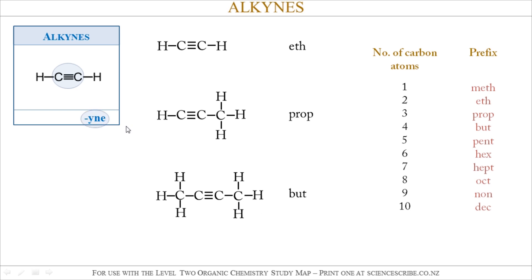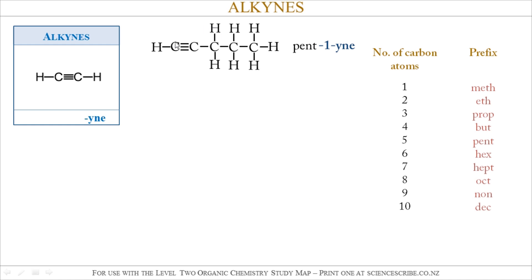All alkynes have the ending -yne, so in these examples I've got ethyne, propyne, and but-2-yne. I have but-2-yne because the triple bond is at the second carbon atom from the left. In this next example, I've got five carbon atoms, so that corresponds to 'pent'. It's an alkyne because it has a triple bond, giving the ending -yne. The triple bond is at the first carbon atom, so the name of this molecule is pent-1-yne.